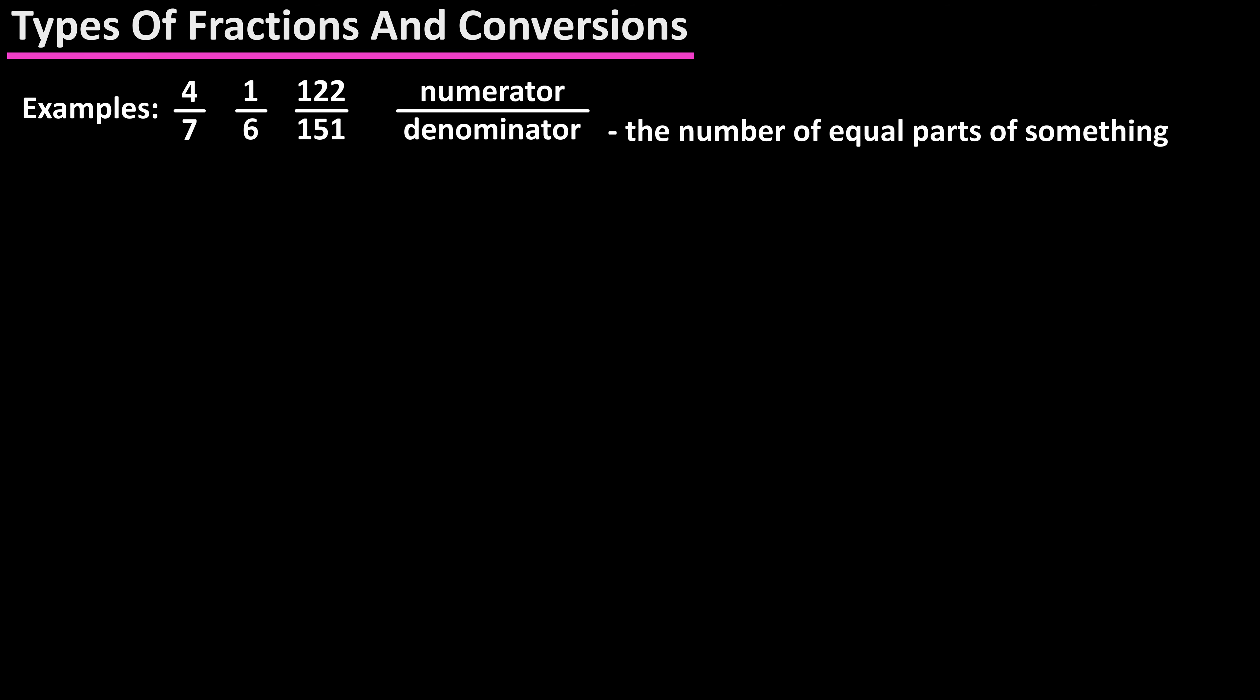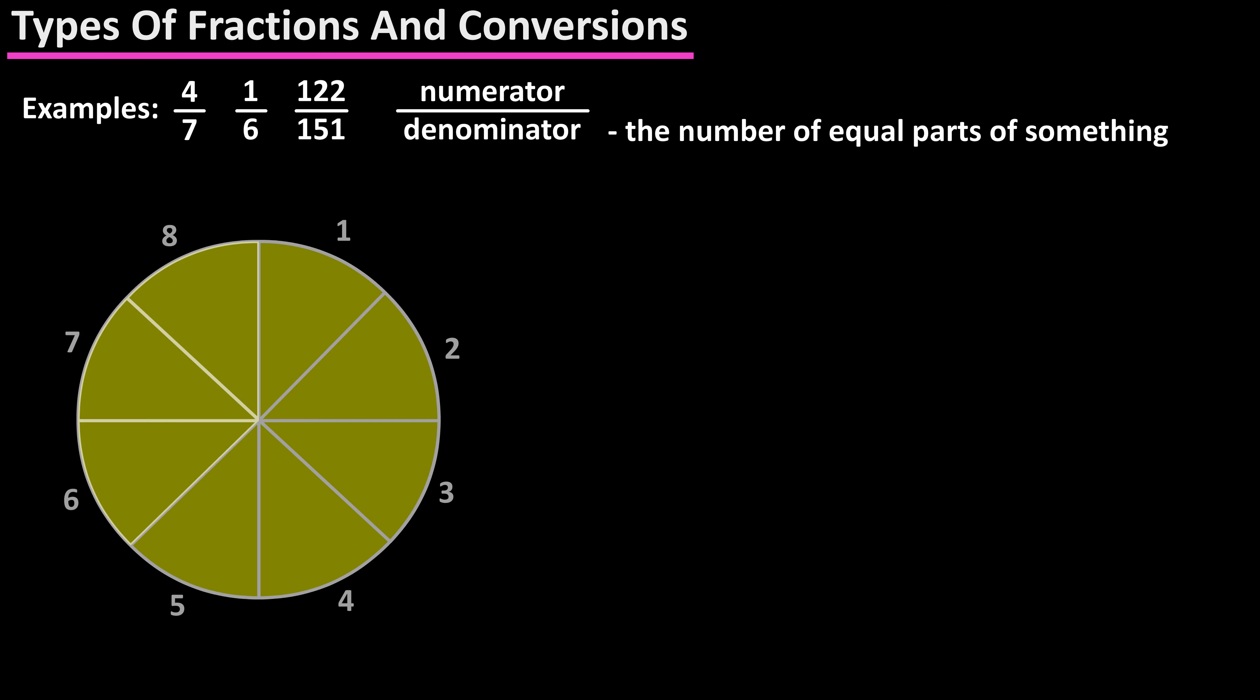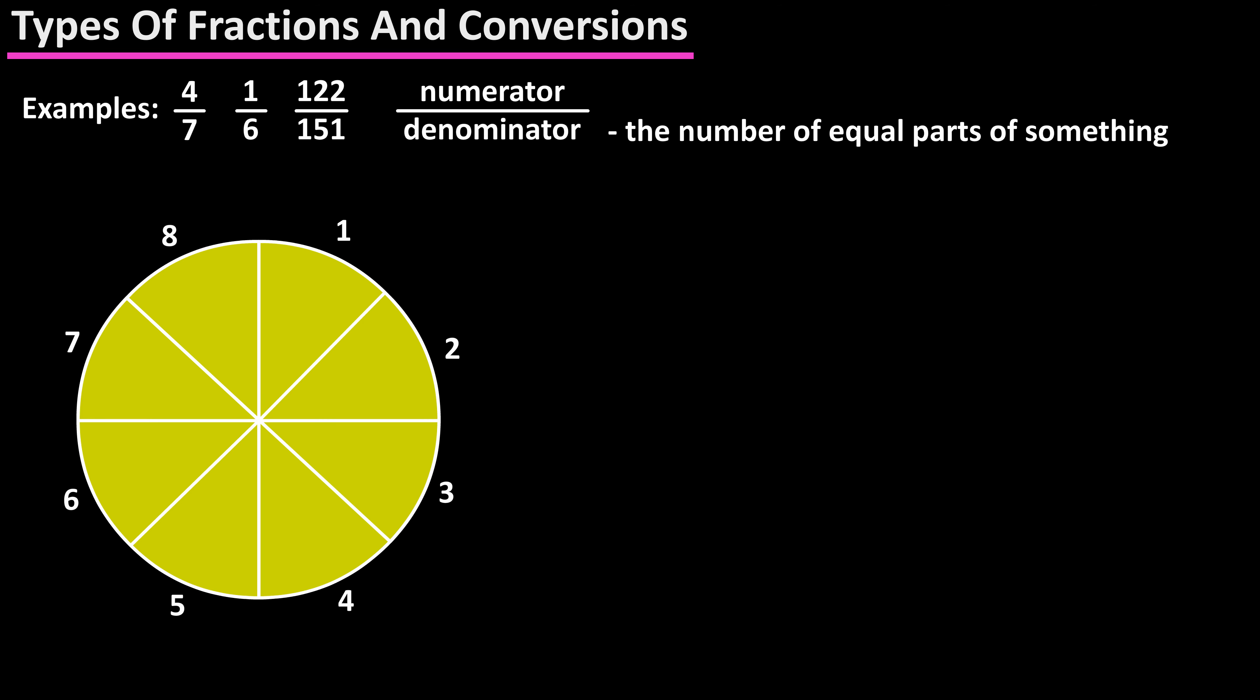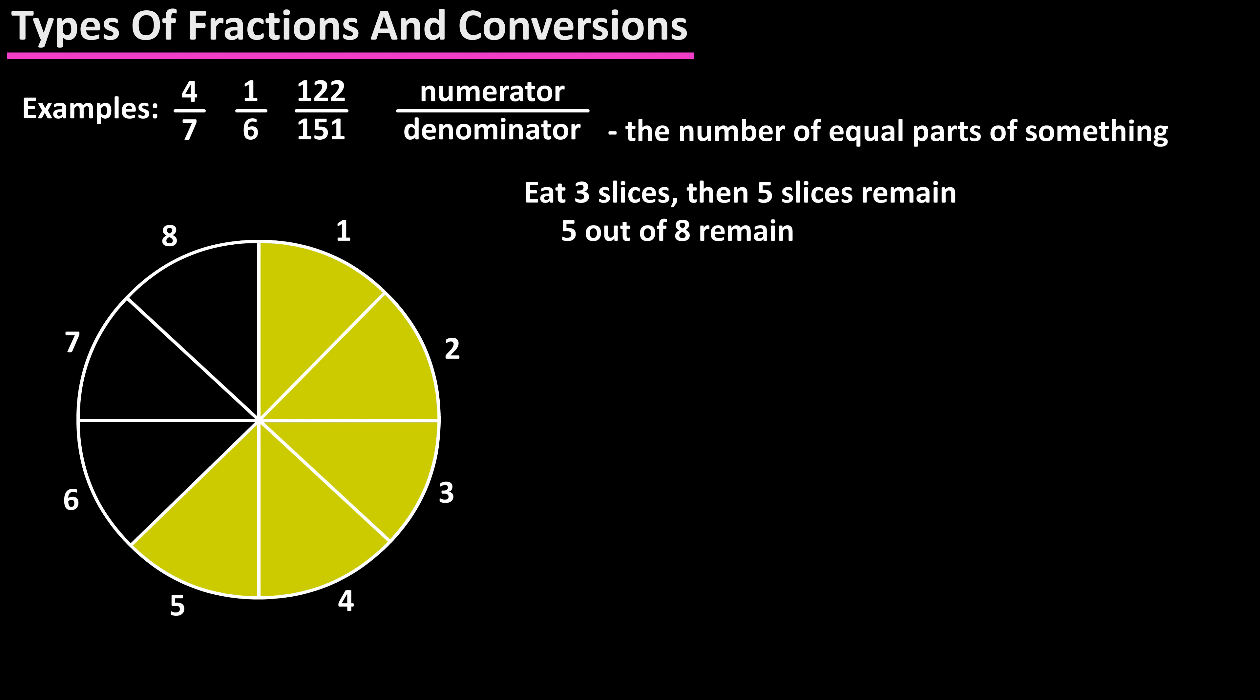The denominator represents the number of equal parts of something. For instance, in this pie there are eight slices. If we eat three slices, then five slices out of the eight parts remain, which written as a fraction is five over eight.